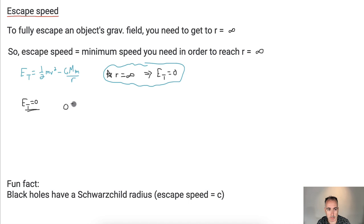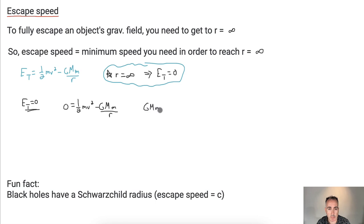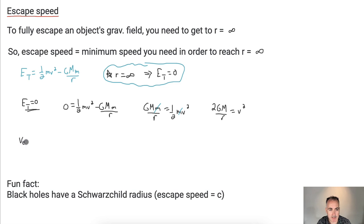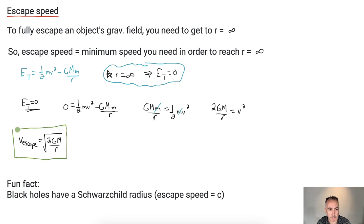Setting ET equals zero, we get: zero equals one half mv squared minus G M m over R. Moving the negative term to the left gives G M m over R equals half mv squared. Canceling the lowercase m's and multiplying both sides by two gives 2 G M over R equals V squared. So the escape speed is just the square root of 2 G M over R. This is another equation you get on your data booklet, but I'm showing you how to derive it.